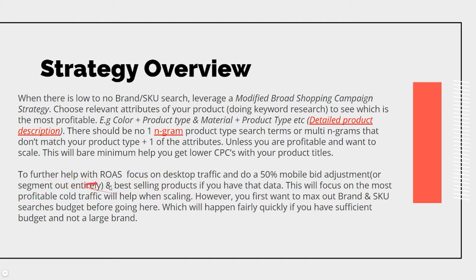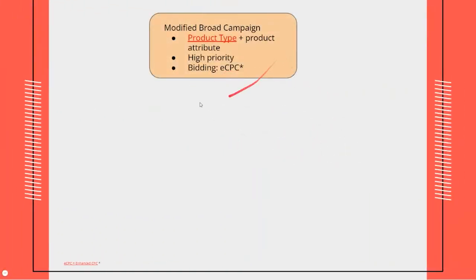You want to target higher-intent terms like 'black football helmet for adults' first, get profitable, then open up to broader terms. At minimum, you'll get lower cost-per-clicks as your product titles improve in Google Merchant Center. Focus on desktop traffic and typically apply a 50% mobile bid adjustment — no more than 80% unless you have a separate campaign for mobile. Keep campaign consolidation to help conversions scale to that 30-to-45 conversion threshold sooner, and focus on best-selling products in broad. Max out brand and SKU searches first, then slowly scale with cold traffic.